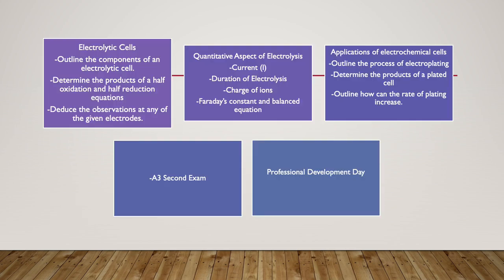On Sunday we will be going over electrolytic cells. In that lesson we will learn how to outline the components of an electrolytic cell, determine the products of a half oxidation and a half reduction equation, and deduce the observations made at any of the given electrodes. We will also learn the requirements for an electrolytic cell to function and why we use electrolytic cells in industrial applications.